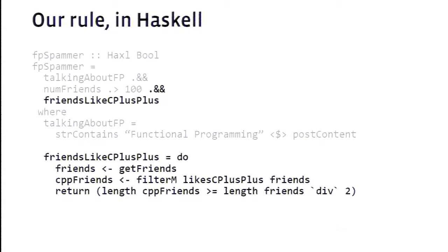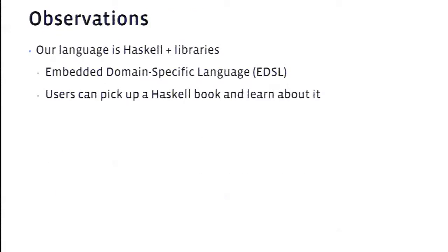The final condition is whether the friends like C++. We define friends_like_cpp: first we get the friends of the current user, giving a list of friends, then filter that list by a predicate — we've assumed something called like_cpp is available. This filters the friend list by that predicate, giving us friends that like C++. Finally, we do the calculation that determines whether more than half the friends like C++. That's basically our rule.